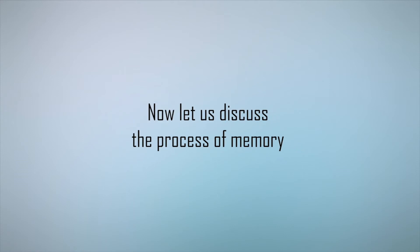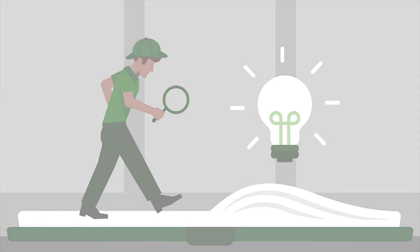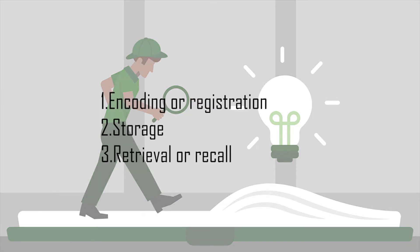Let us now discuss the process of memory. Information must be put into memory before any piece of information can be remembered. From an information processing perspective there are three main stages: encoding or registration, storage, and retrieval or recall.